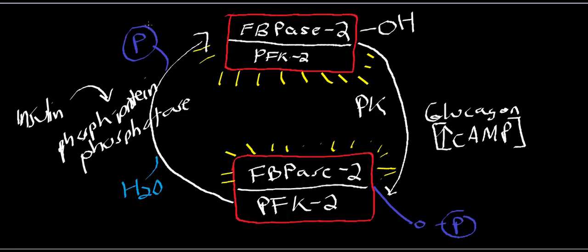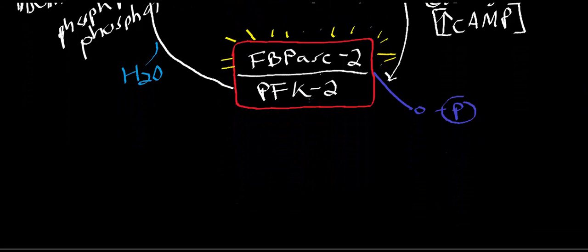When fructose bisphosphatase 2 is activated, there will be decreased levels of fructose 2,6-bisphosphate. If there are decreased levels of this molecule, it can't bind to the allosteric sites on PFK1, and glycolysis stops. So in the activity of fructose bisphosphatase 2, glycolysis is inhibited and gluconeogenesis is stimulated — this corresponds to low levels or destruction of fructose 2,6-bisphosphate.